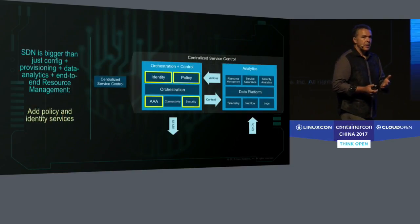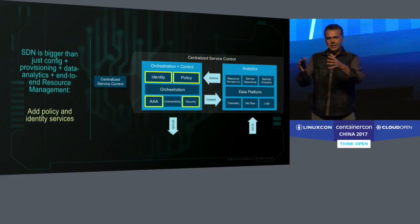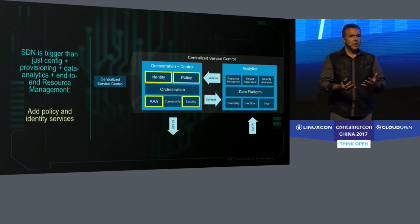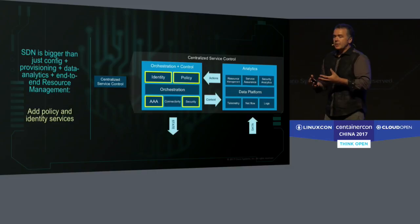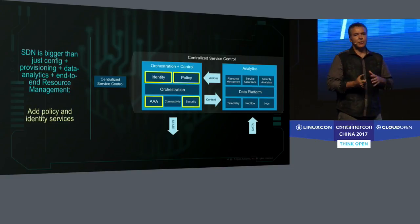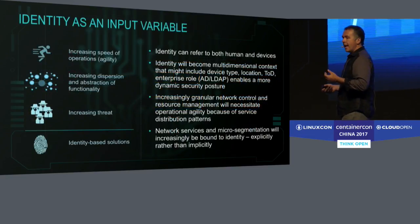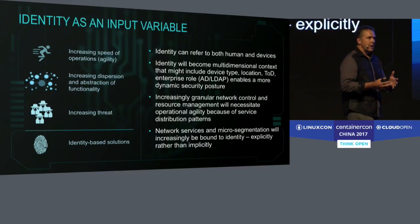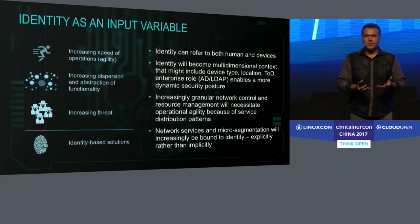Creating an SDN-controlled network, getting the data out of the network, and creating a feedback loop between these pieces is what's been worked on over the last couple of years — but that still doesn't build the service that's necessary. What's missing is identity and the policy to drive the micro-segmentation and the service chains to be created inside that data center or inside that CORD architecture. Using identity as an input variable is now one of the newest things added into this orchestration architecture as part of the ONAP architecture at the Linux Foundation.